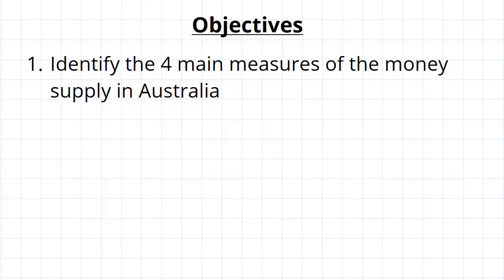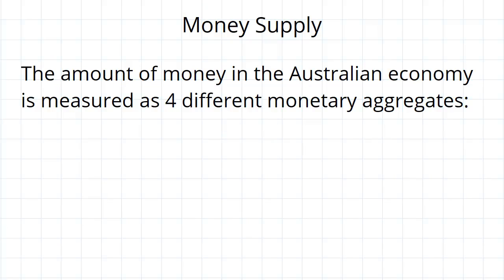G'day guys. In this video we're just going to briefly go over the four main ways of measuring the money supply in Australia. The amount of money that is in the Australian economy can be measured as four different monetary aggregates, and which one you choose to use depends on what purpose you have in trying to measure the money supply.